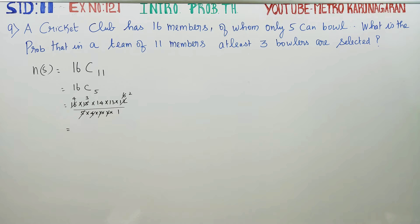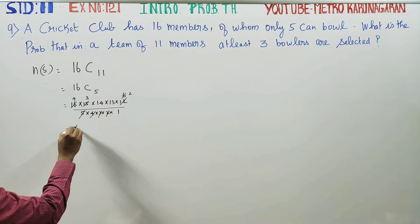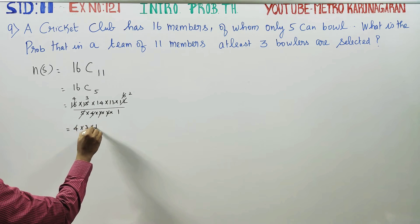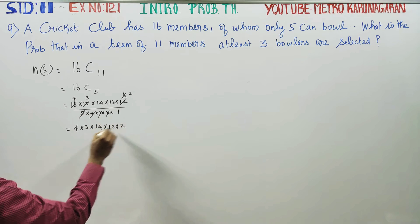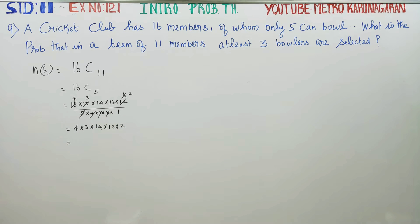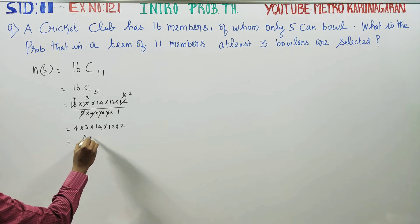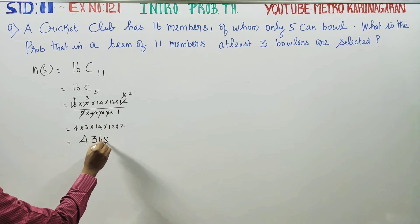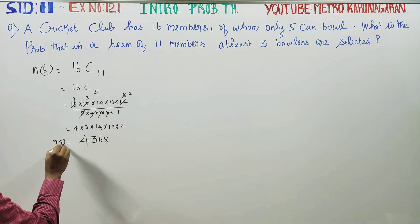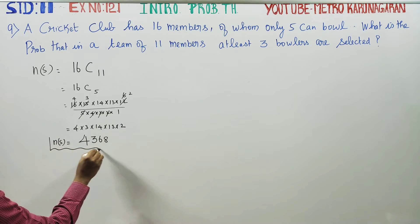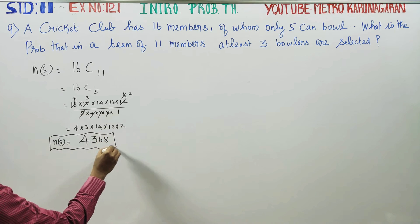If you look at result, 4 into 3 into 14 into 13 into 2. If you multiply it, you will be getting 4368. This is N of S. This is stage 1.